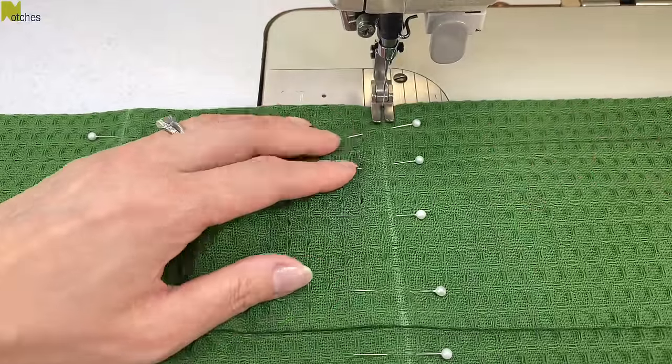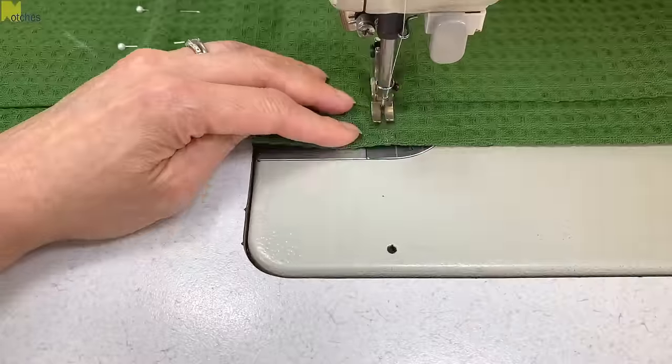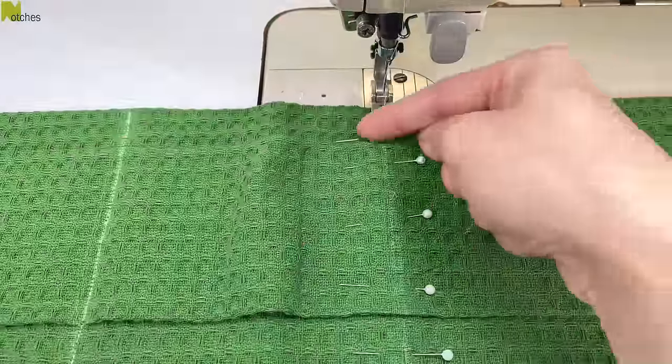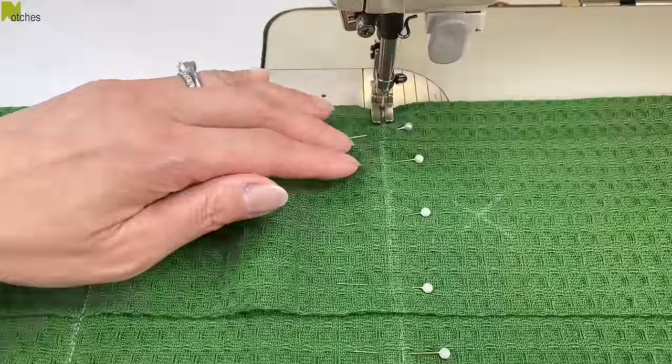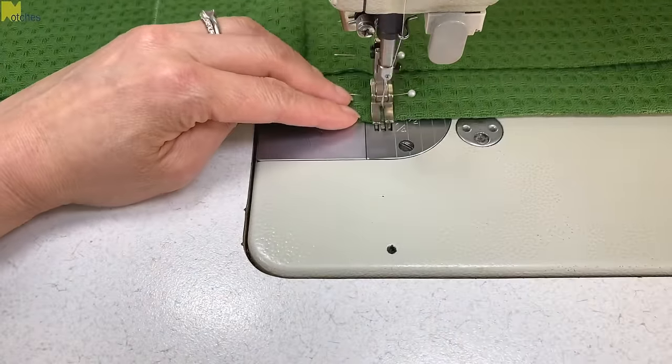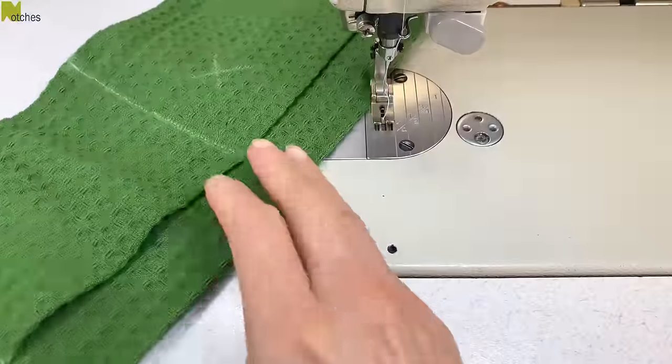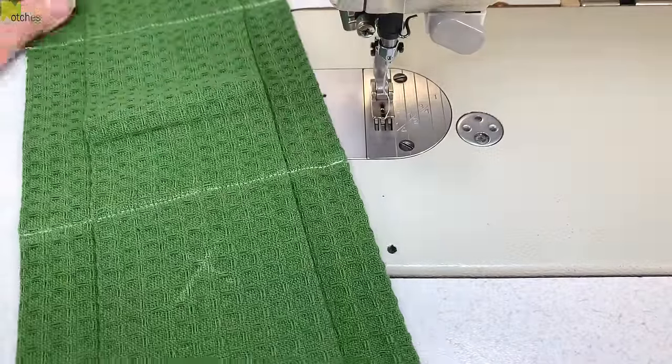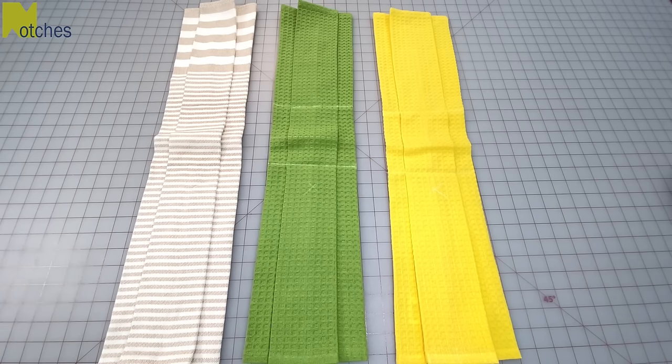Next, we need to stitch right on those lines, back tacking at the start and finish. If you have pins that are perfectly perpendicular or at right angles to your line, it's fine to stitch right over them. Remove all the pins and then turn the towel around so that the back where the mark is, is facing you. This is how you prepare the towel for all of the styles. I've prepared a different color for each one.